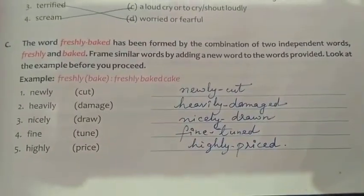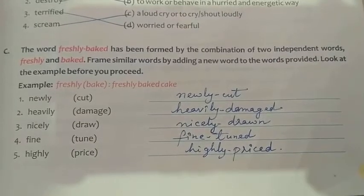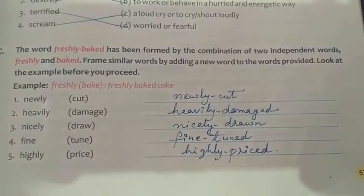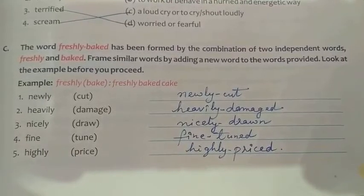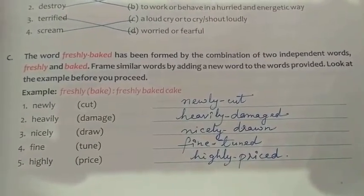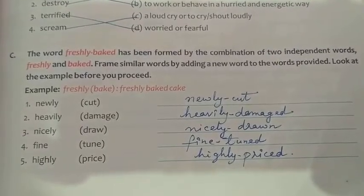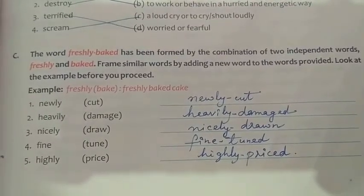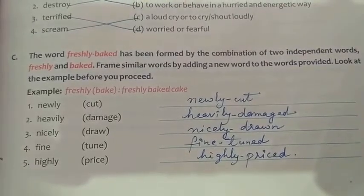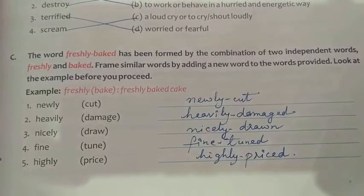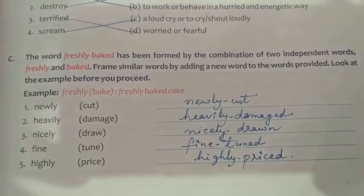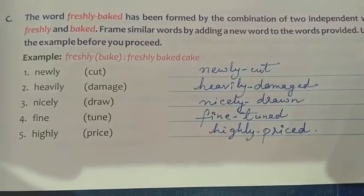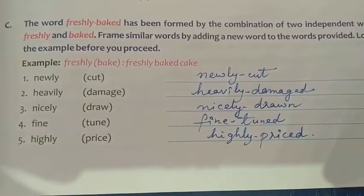Now coming to Exercise C part. The word 'freshly baked' has been formed by the combination of two different words — freshly and baked. Frame similar words by adding a new word to the words provided. Look at the example before you proceed. Number one: newly-cut. You have to write 'newly' and 'cut' with a hyphen in between.